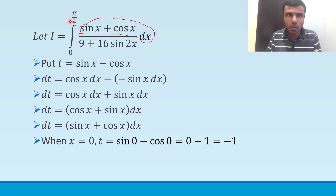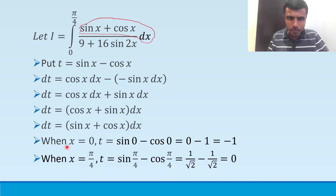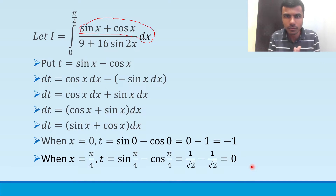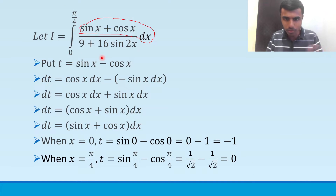The upper limit for x is π/4. When x = π/4, t = sin(π/4) minus cos(π/4) = 1/√2 minus 1/√2 = 0. So my upper limit for t is 0, and my integral will be from minus 1 to 0.